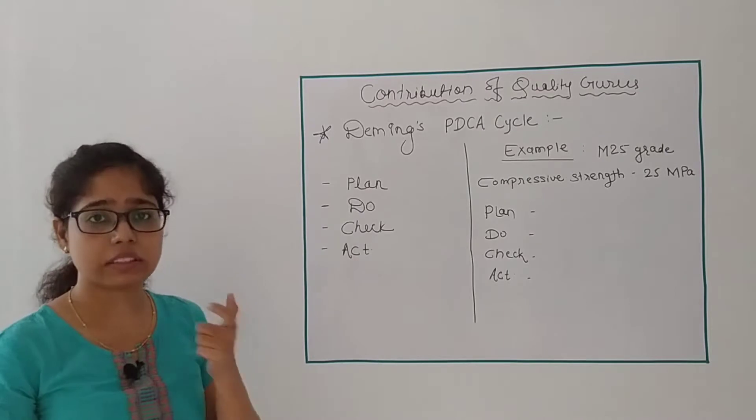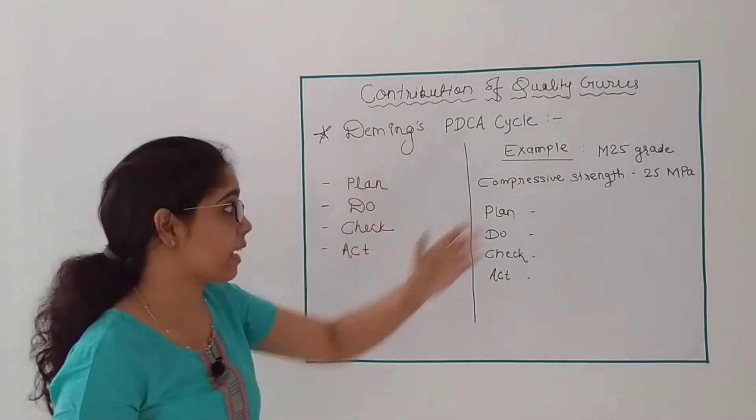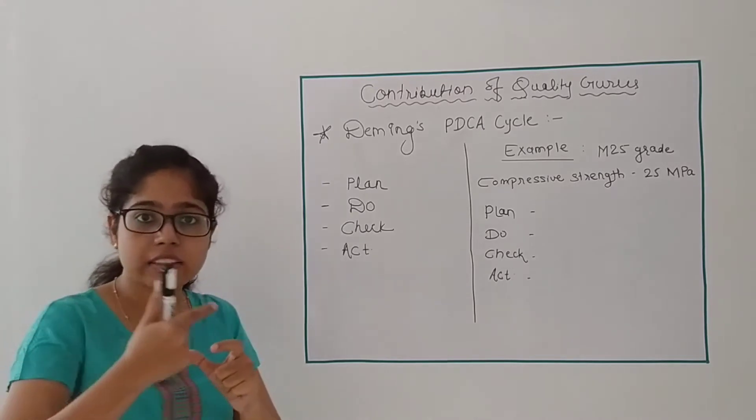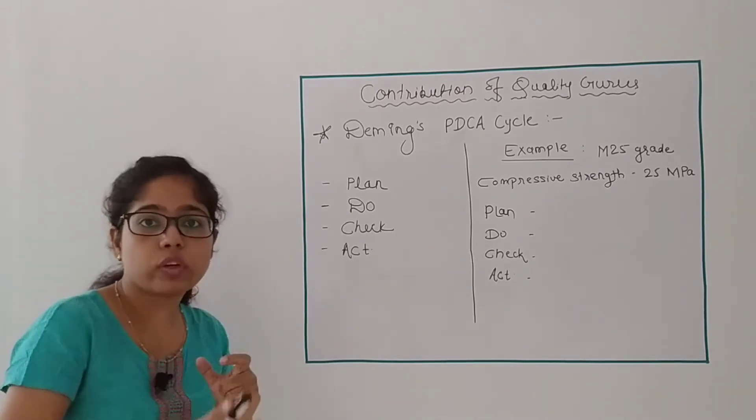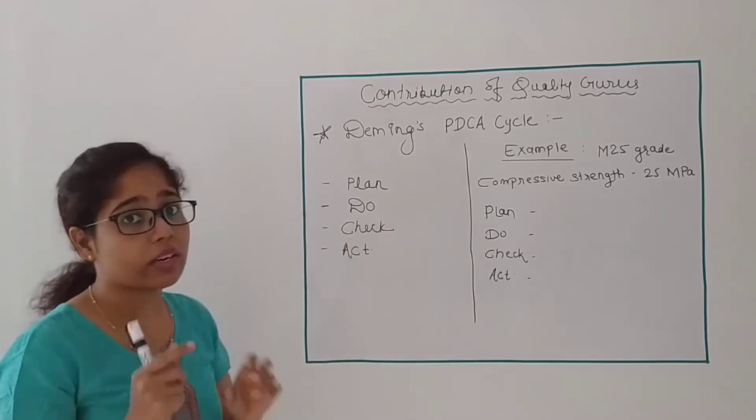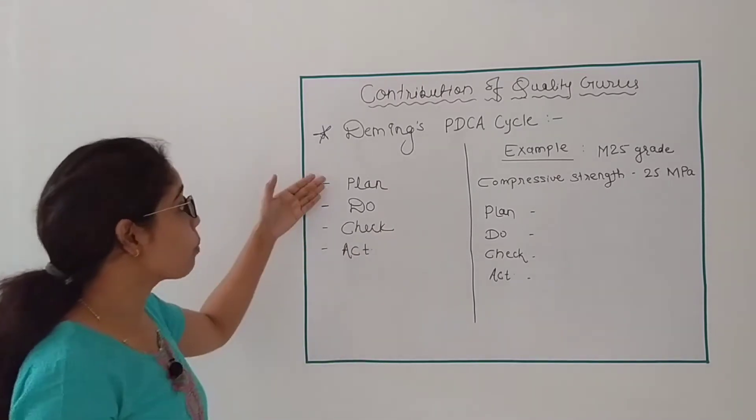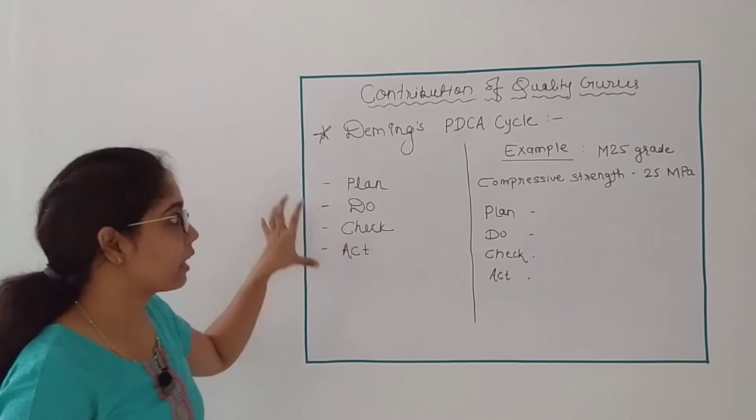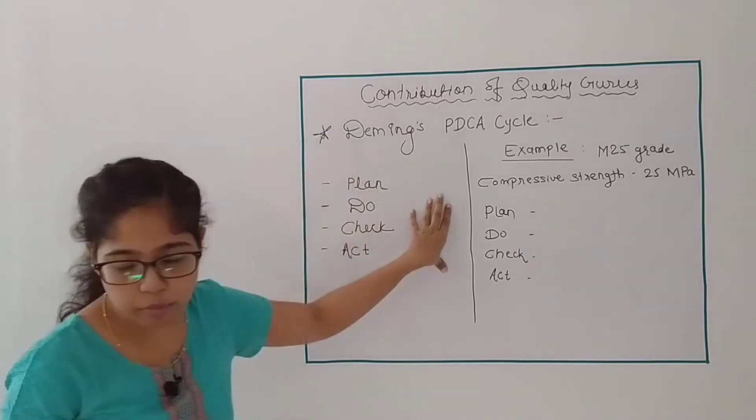Now Deming has given one theory that is PDCA cycle. Why is it called a cycle? Because we are continuously running that process until you get the good quality product. That's why it is called a cycle. Now PDCA stands for Plan, Do, Check and Act. This method we can elaborate with one example.